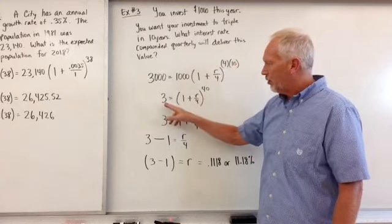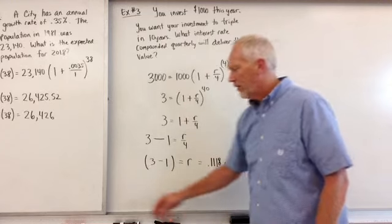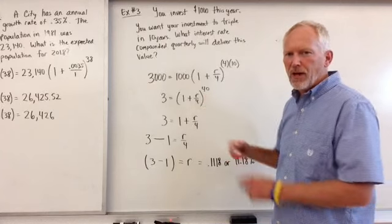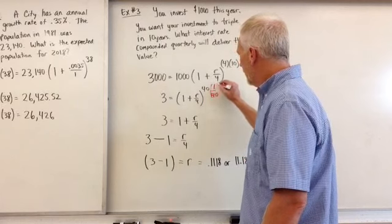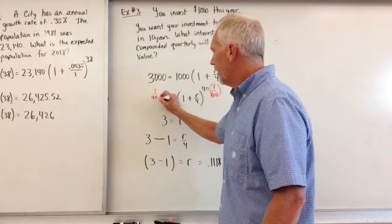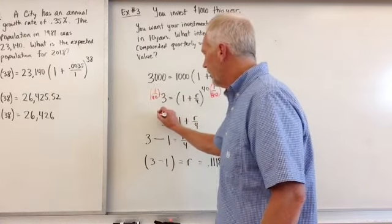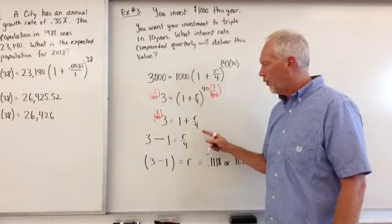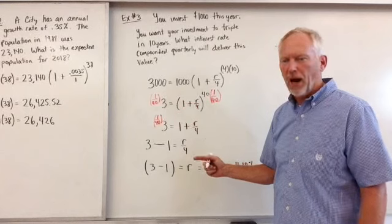So that simplifies to three times the quantity one plus R over four to the fortieth. Now, if you recall from exponential powers, if I have this side to the fortieth, then what I want to do is exponentially multiply this times one to the fortieth. And that'll take care of that. And then I need to multiply this to the one fortieth of my three. So then three to the one fortieth will equal one plus R over four, which is nice because now I can deal with getting my R. I don't have an exponential power anymore.